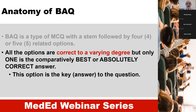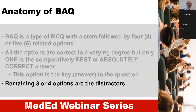This is important — the very characteristic statement for BAQ is that all the options are correct to a varying degree, but only one is comparatively best or absolutely the correct answer. This correct answer is called the key to the question. The remaining three or four options are called distractors.